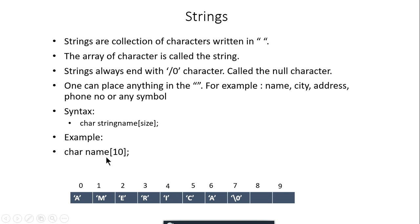If I assign the string 'America' to the array, the characters are stored one by one: 'A' at index 0, then M, E, R, I, C, A. America has seven characters, but I allocated ten spaces. At the end of every string, C language introduces the null character backslash zero to free up the remaining spaces for other memory use.